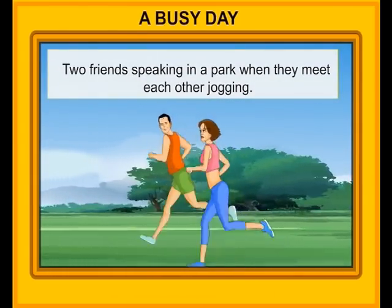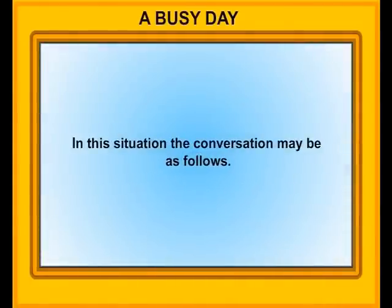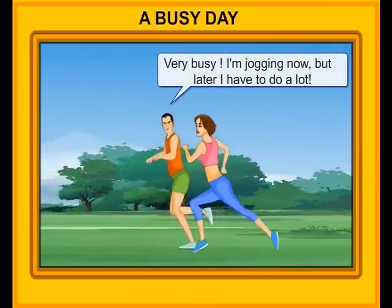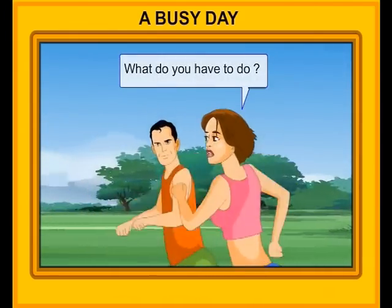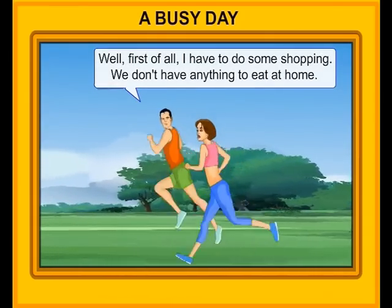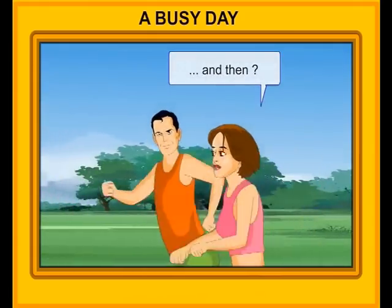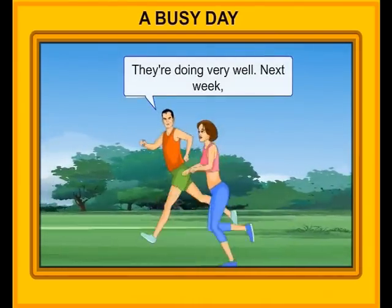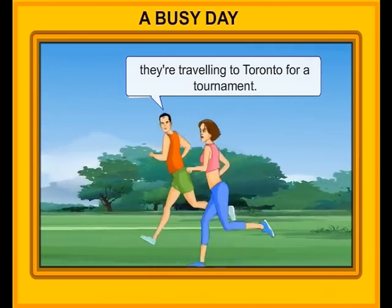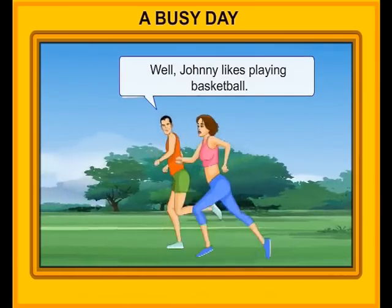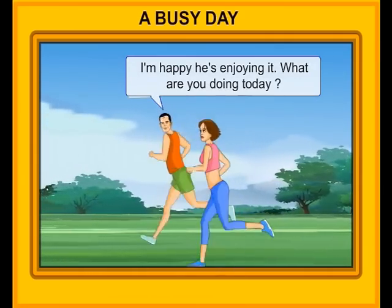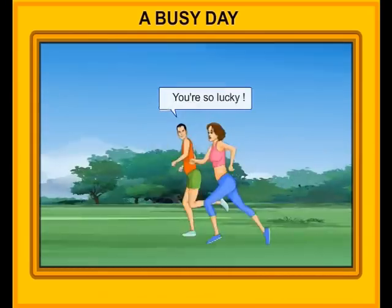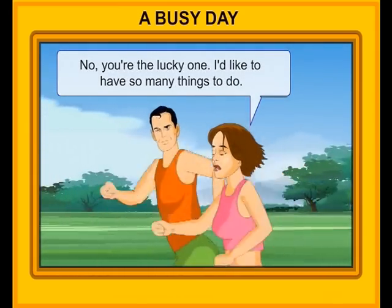A busy day. Two friends speaking in a park when they meet each other jogging. Hi, Rosie. How are you today? I'm great. And you? Very busy. I'm jogging now, but later I have a lot to do. What do you have to do? Well, first of all, I have to do some shopping — we don't have anything to eat at home. And then? Little Johnny has a basketball game this afternoon. I am driving him to the game. Oh, how is his team doing? They're doing very well. Next week they are travelling to Toronto for a tournament. That's impressive. Well, Johnny likes playing basketball. I'm happy he's enjoying it. What are you doing today? I'm not doing much. I'm meeting some friends for lunch, but other than that, I don't have much to do today. You're so lucky. No, you're the lucky one — I'd like to have so many things to do.